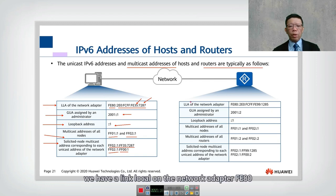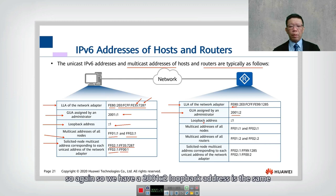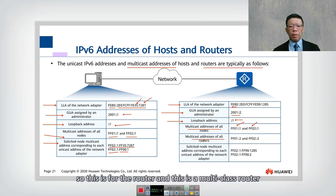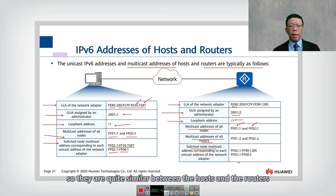For a router in IPv6, we also have a link-local address on the network adapter starting with fe80, and a global unique address such as 2001::2. The loopback address is the same. The router also has multicast addresses ff01 and ff02 corresponding to different multicast scopes, as well as a solicited-node multicast address. So hosts and routers are quite similar in their IPv6 address assignments.